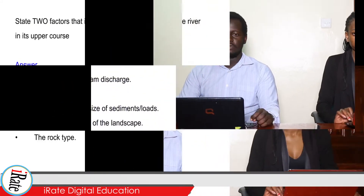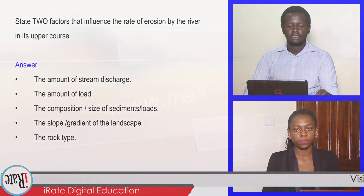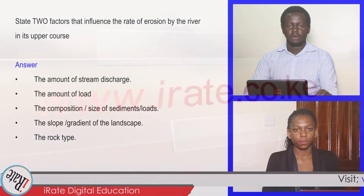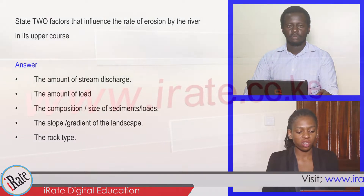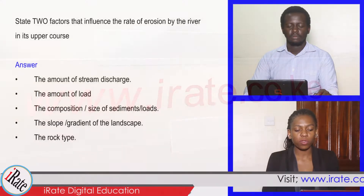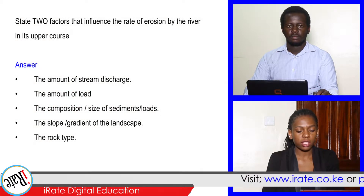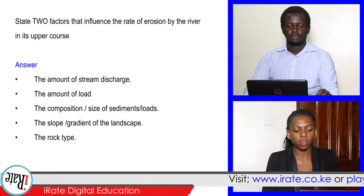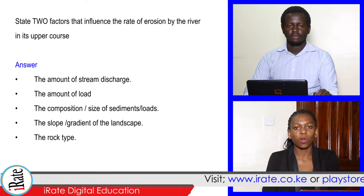State two factors that influence the rate of erosion by the river in its upper course. Number one, the amount of stream discharge. Two, the amount of load. Three, the composition or the size of sediments or loads. Four, the slope or gradient of the landscape. Five, the rock type.